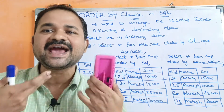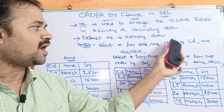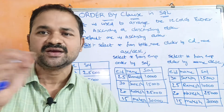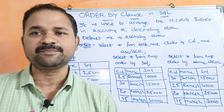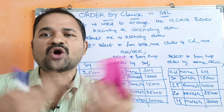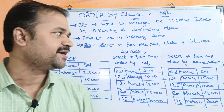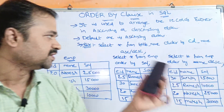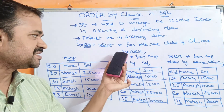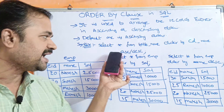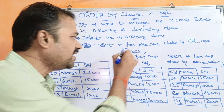Now let us see the syntax for the ORDER BY clause: SELECT * FROM table_name ORDER BY column_name. Note that in between ORDER and BY we have to use a blank space. After the column name we can specify either ASC or DESC. ASC means the records will be arranged in ascending order, and ASC is the default.